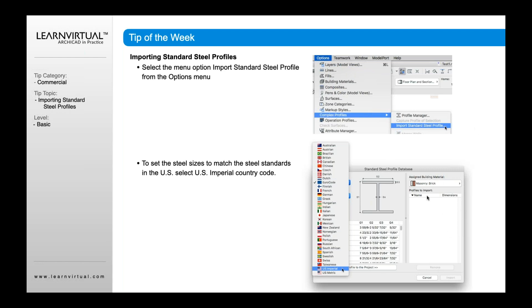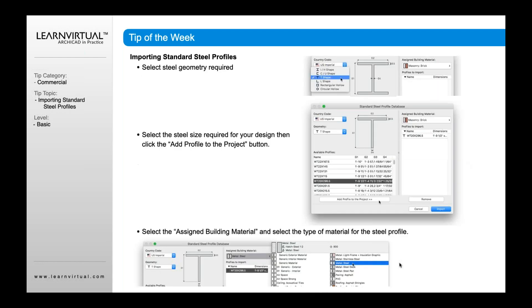Once you do that, the Standard Steel Profile dialog will come up. It typically defaults to U.S. Imperial, but just in case it doesn't, go select U.S. Imperial. Once you've done that, you then go and define or select what type of shapes you want to import into your Profile Manager.